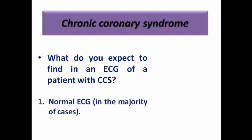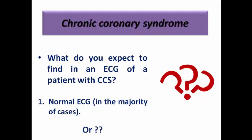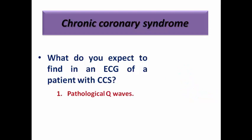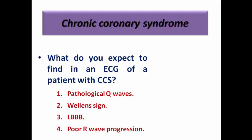In most cases it would be a normal ECG — that's what I expect. But it may show other abnormalities that sometimes may alter my management plan. I may see pathological Q waves in the resting ECG, I may see Wellens sign, I may see left bundle branch block, or I may see poor R wave progression.